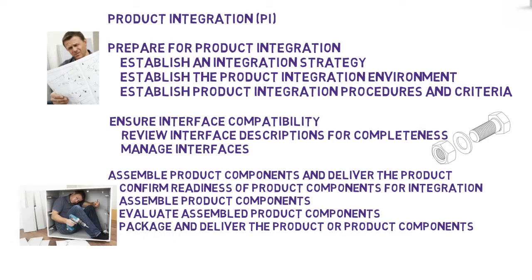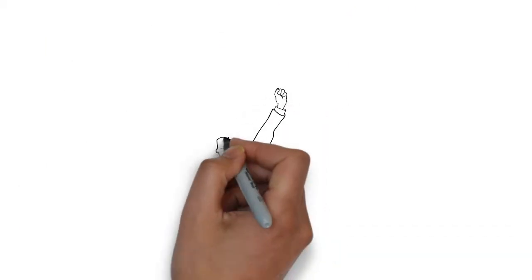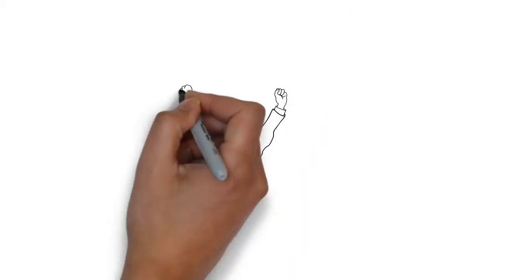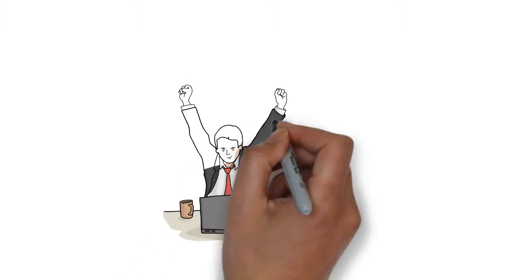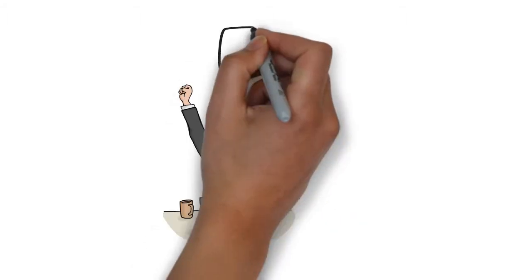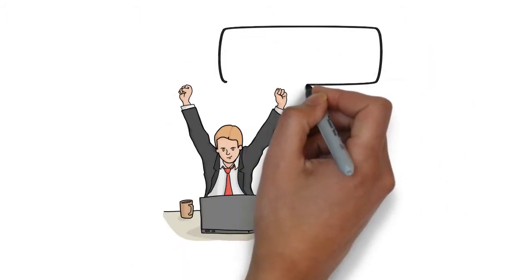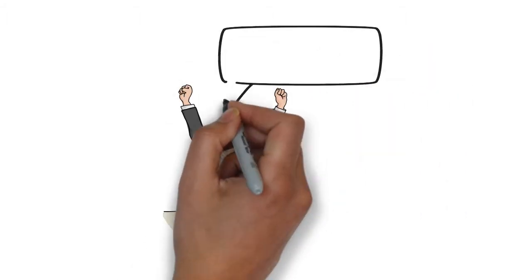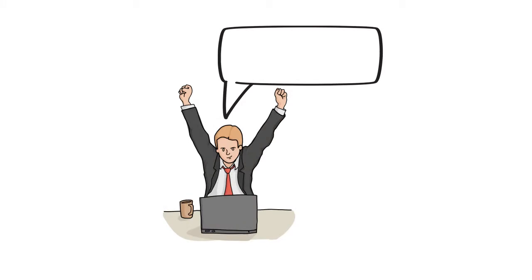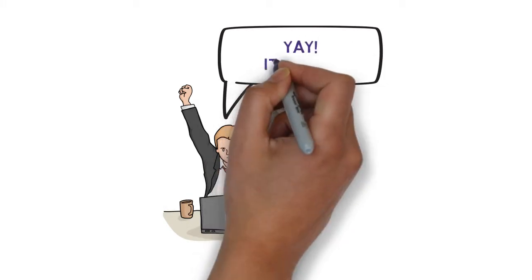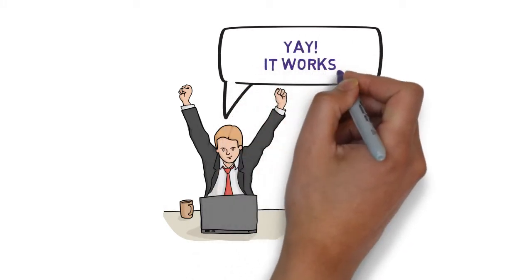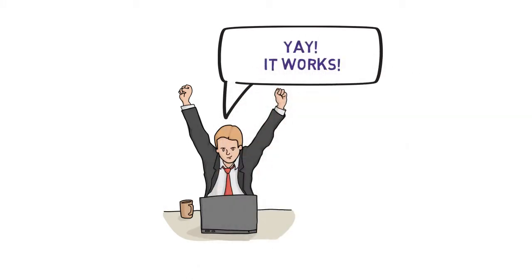Note that this applies not only to whole product development, but also to component updates or partial releases as well. Verification answers the question: did I build the product right? In other words, we're looking at defect containment, and this occurs through two mechanisms — peer reviews and test.